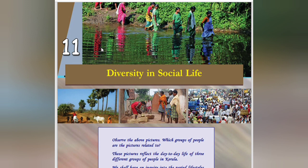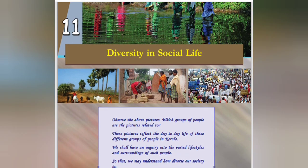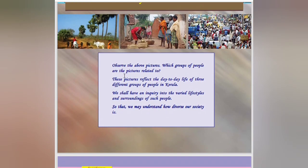Hello all, welcome to Teacher at Home. Today's class we are going to learn the 11th chapter, that is the diversity in social life. Observe the above pictures — which groups of people are the pictures related to? These pictures reflect the day-to-day life of three different groups of people in Kerala. We shall have an inquiry into the varied lifestyles and surroundings of such people so we may understand how diverse our society is.